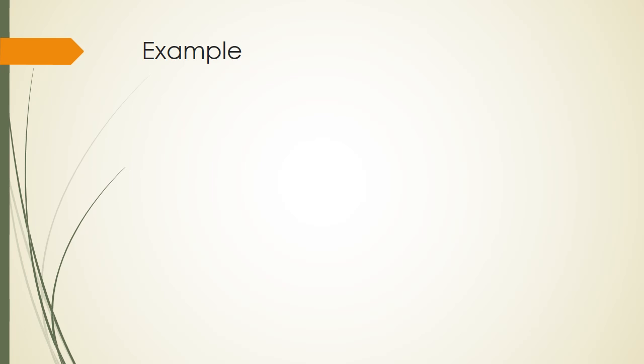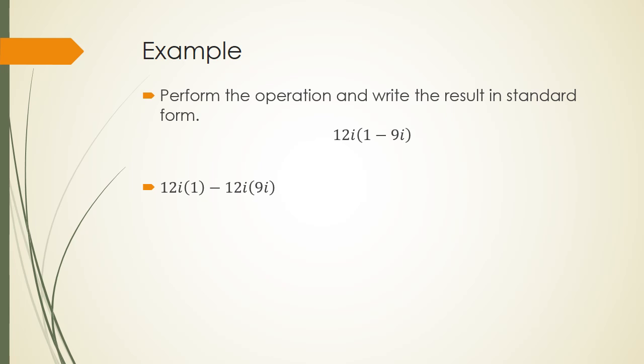Here we have another example. Perform the operation and write the result in standard form. So we have 12i times i minus 9i. So we're going to distribute. And that gives us 12i minus 108i squared. Remember that i squared is negative 1. So we have 12i plus 108. However, this is not in standard form. You need to put the 108 first and the 12i second.